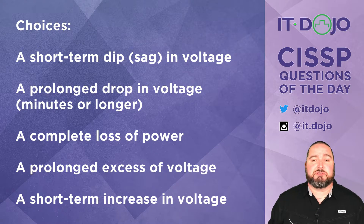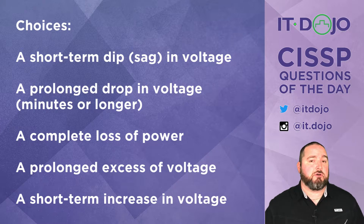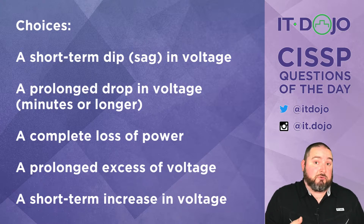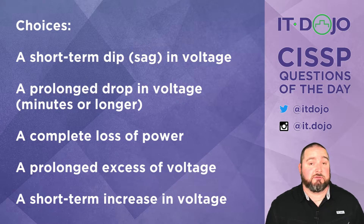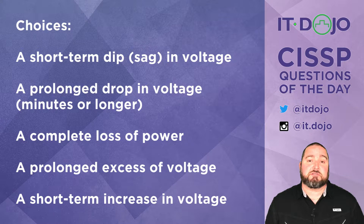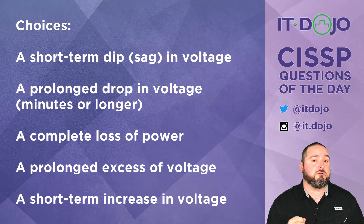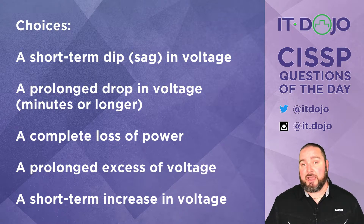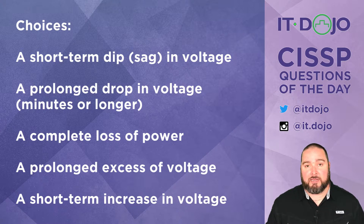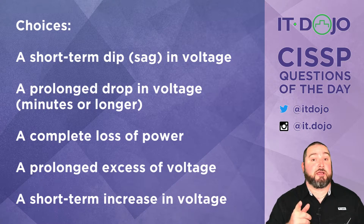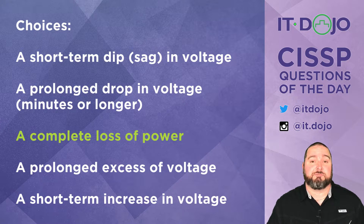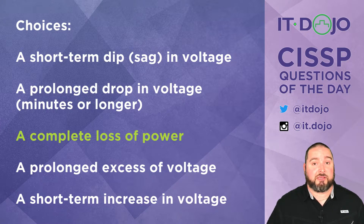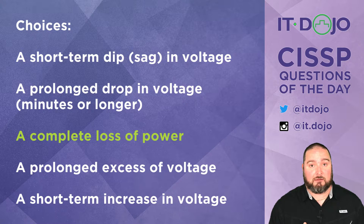The first choice says a short-term dip in voltage. No, that is known as either a dip or a sag, so that is not a blackout. The second choice is a prolonged reduction or dip in voltage lasting minutes or hours. That is actually a brownout, not a blackout. The third option is the one you're looking for — it's a complete loss of power. It doesn't matter if the power goes out for 10 seconds or 10 hours. That's a blackout.